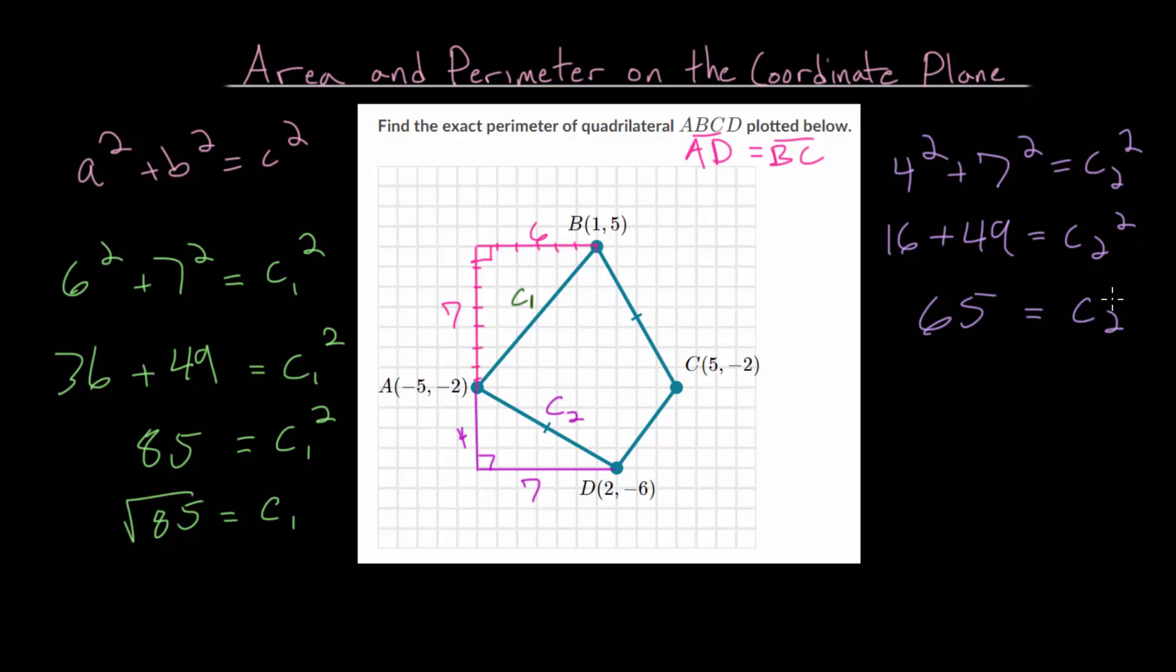And adding 10 brings us to 59, and 6 more brings us to 65. And to find c2, we're going to square root both sides. So c2 is the square root of 65, which means that if we called this one over here c4, that one also is the square root of 65, since we know those two line segments are equal.